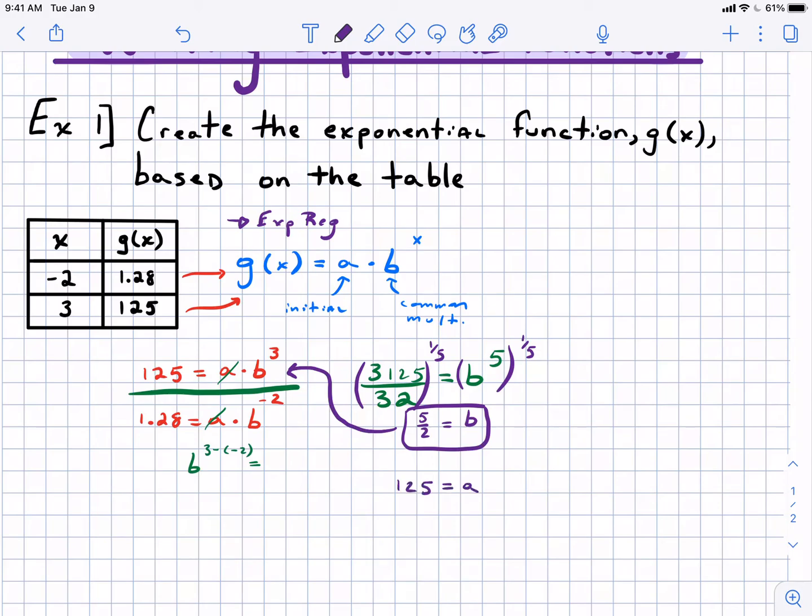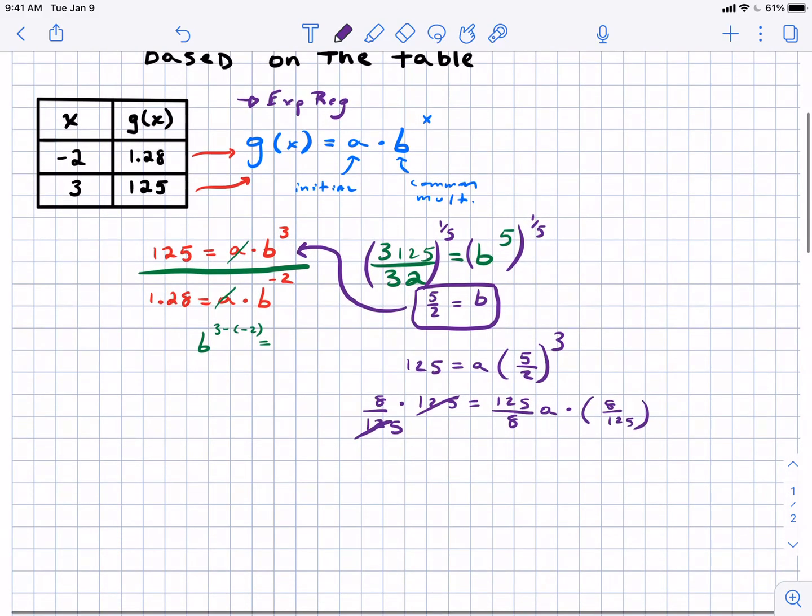So I'm going to substitute in a b value of five halves to the third power and now I'm just simply going to solve this. Five halves to the third power is 125 over eight. To get rid of that coefficient, I'm going to multiply by the reciprocal. This works out nicely, I don't even need a calculator here. We simply get a value, again multiplying by the reciprocal when you have a fractional coefficient just cancels everything out there, and we get a equals eight.